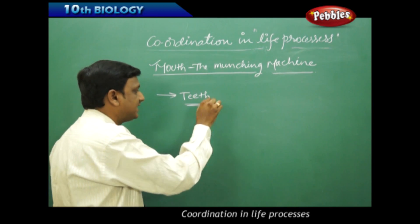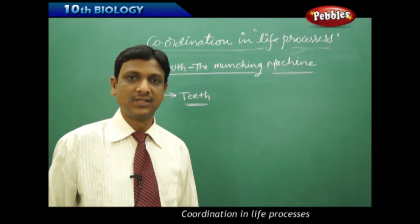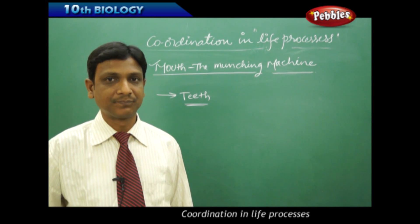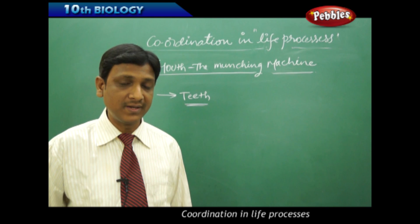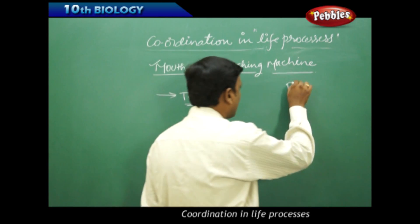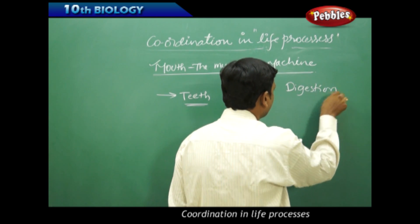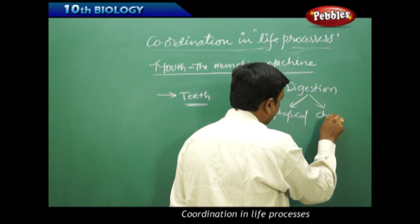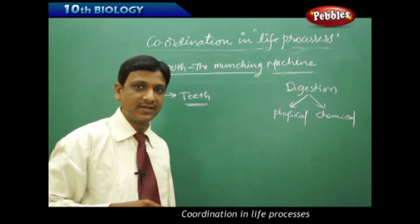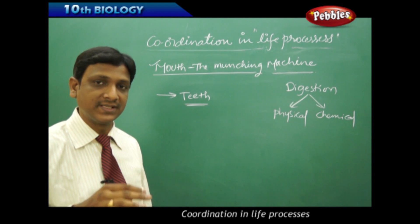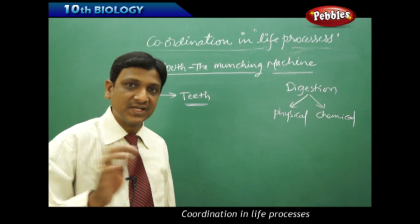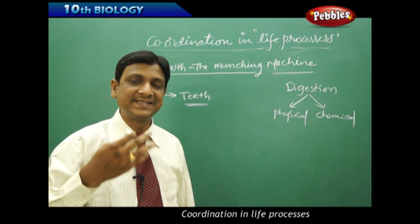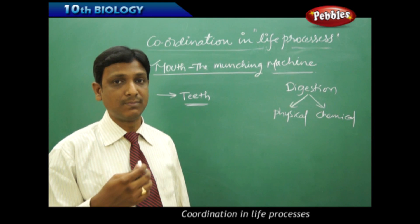Primarily we have the teeth, which cut the food into pieces. If food is not cut into pieces, it cannot be properly digested and digestion may take a very long time. Digestion has two phases: one is physical or mechanical digestion, and the second is chemical digestion. Certain juices, enzymes, and acids secreted in the stomach and intestines carry out chemical digestion. Physical digestion involves the food being moved, churned, and shaken in the stomach, as well as chewed and mixed with saliva in the mouth.